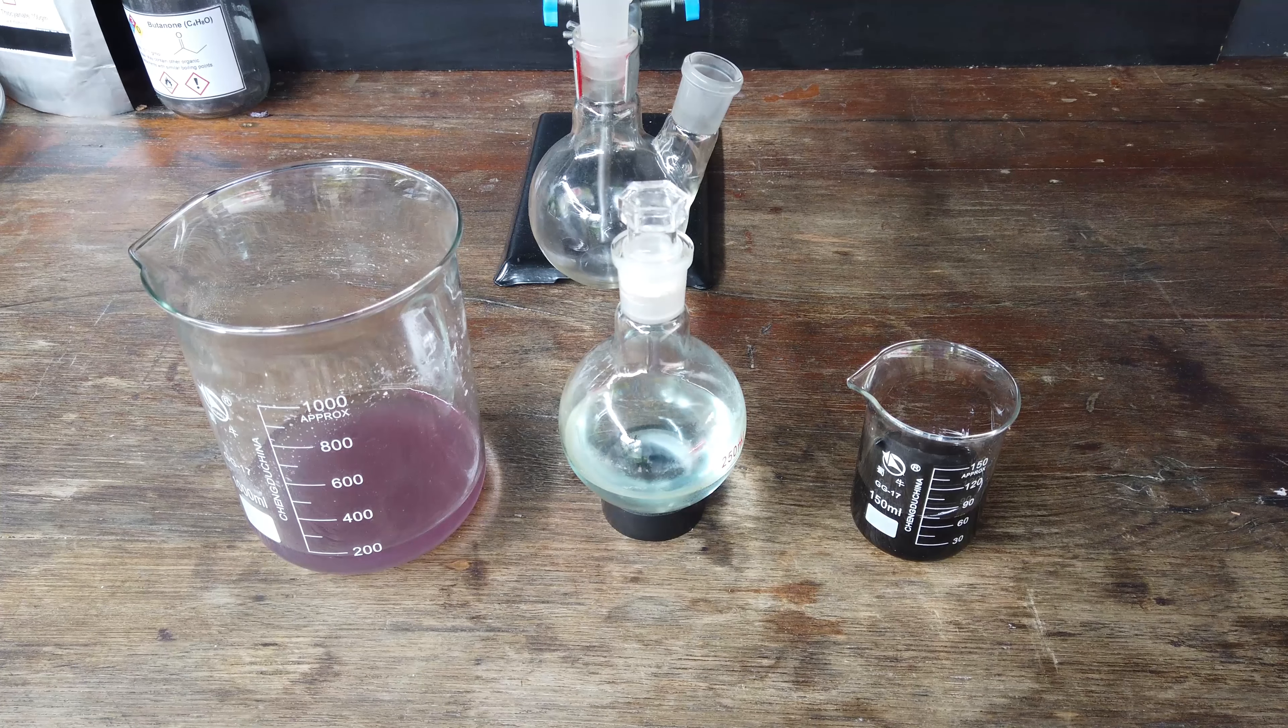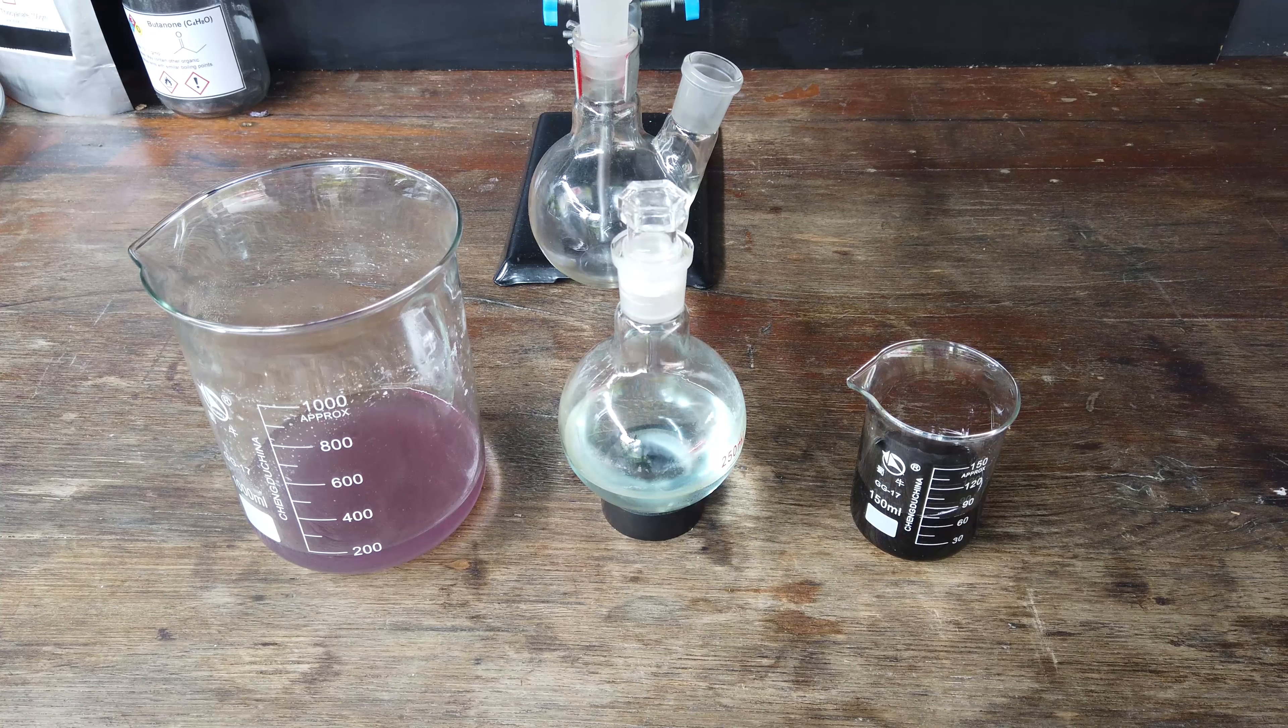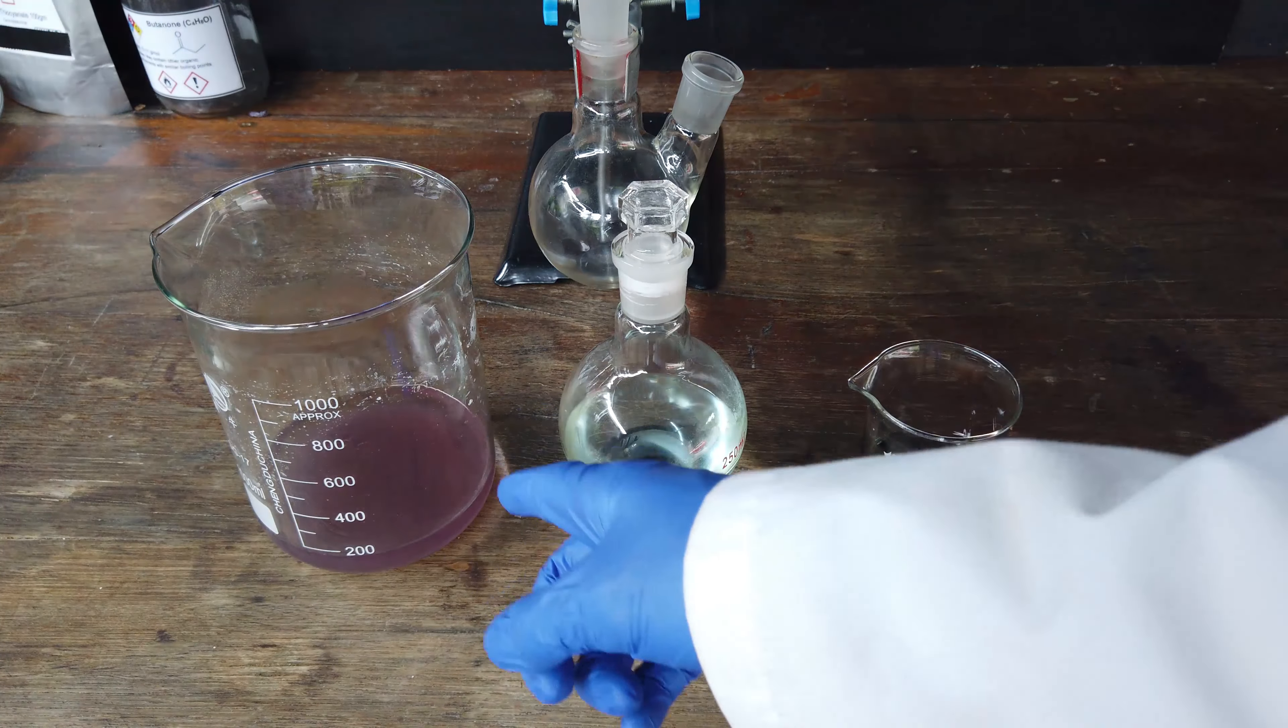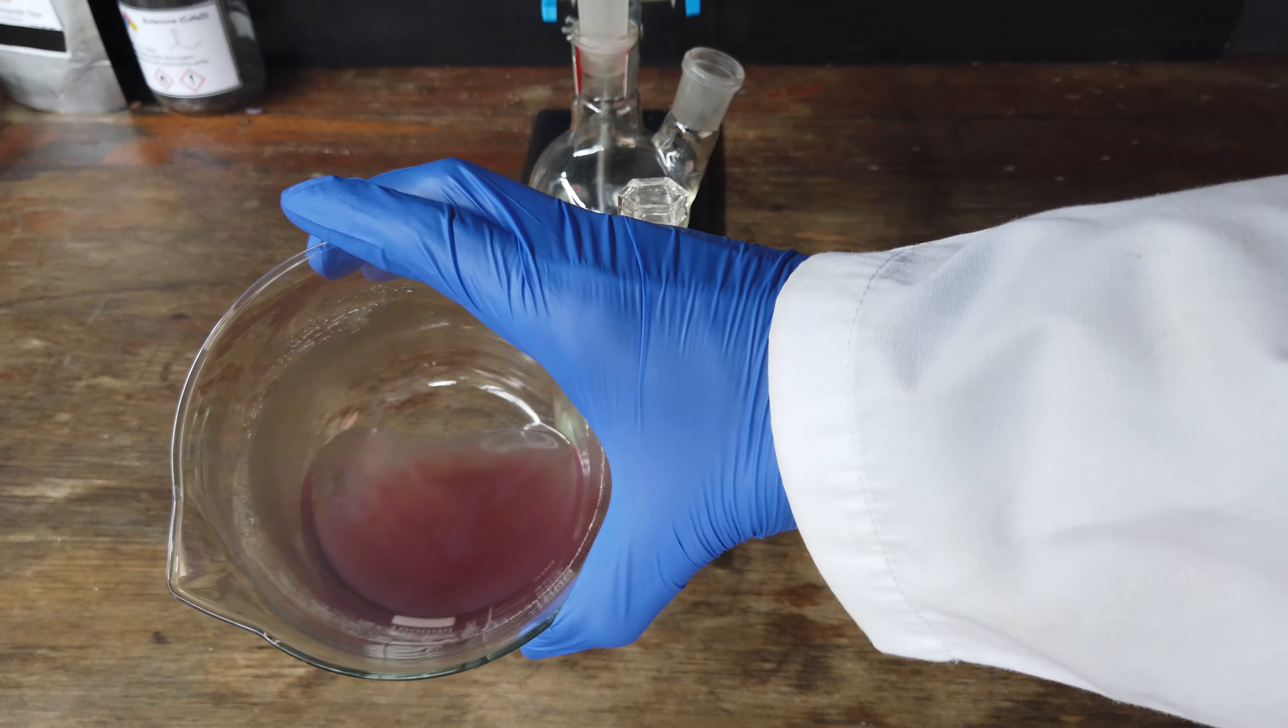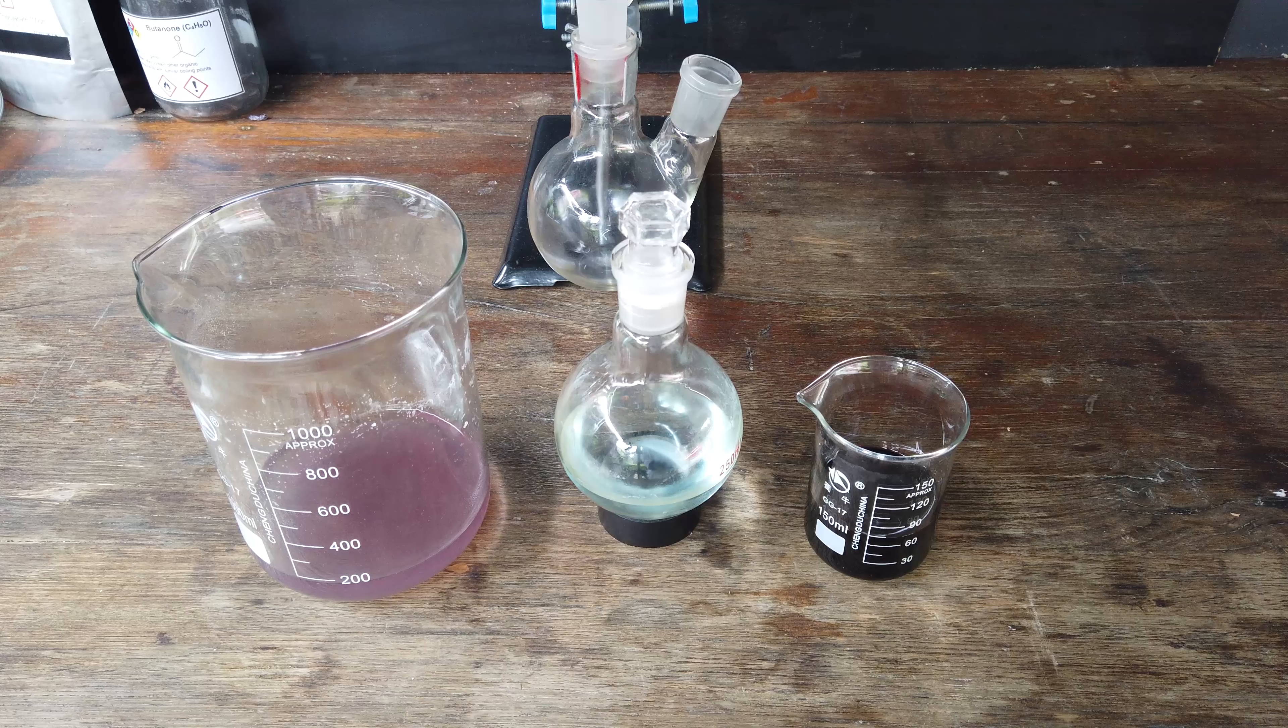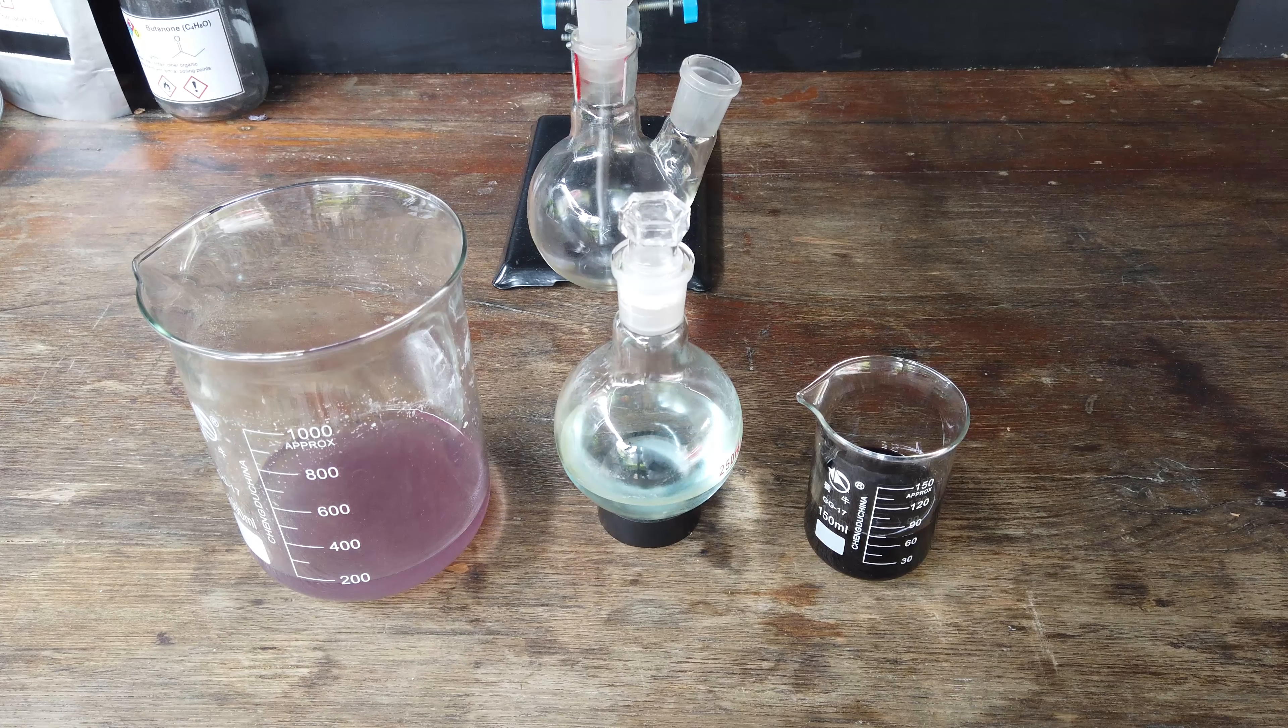With trial and error, I've found that we can extract the cobalt from the butanone layer by dumping the butanone into a solution of sodium carbonate. When we do that, the cobalt precipitates as cobalt carbonate—you can see that as the pinkish precipitate—and the butanone loses most of its color and is ready for another extraction. With that worked out, I think we're ready to do the full extraction on all the cobalt from our original dissolved metals.